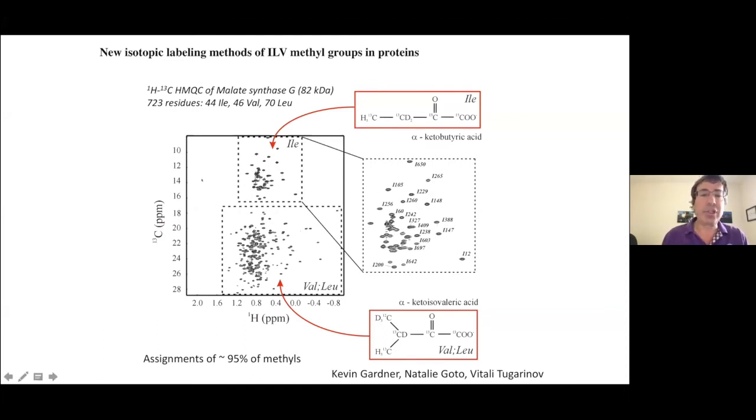And this is just an example of the sort of spectra that one can generate. This is a carbon proton correlation map on malate synthase G, which is 82 kilodaltons and 700 plus residues. It was considered very big in the lab some 15 years ago or so when Vitaly was working on this system. And using technologies that we published over the years, we've been able to assign something like 95% of these methyl groups to specific sites in the molecule. And these then serve as probes of molecular structure and dynamics.